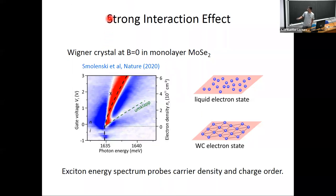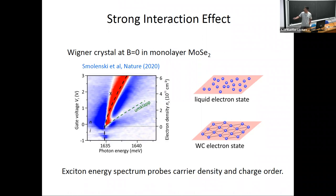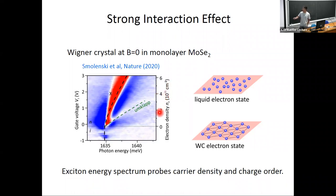When carrier density is introduced, excitons interact with electrons to form the so-called trions, and as a result the exciton energy shows a blue shift. Interestingly at low density an additional feature appears — a second exciton peak. By detailed analysis it was shown that this additional exciton peak comes from the backscattering of excitons from electron Wigner crystals. This is evidence of the Wigner crystal state.